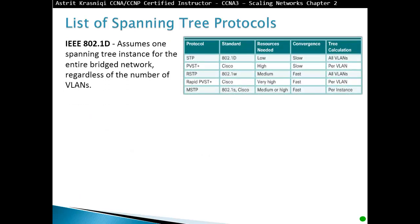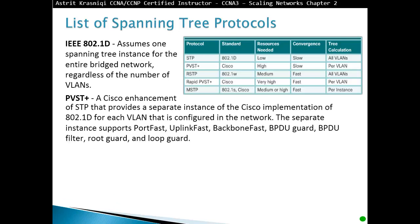IEEE 802.1D assumes one Spanning Tree instance for the entire switch network regardless of the number of VLANs. A Cisco enhancement, per-VLAN Spanning Tree Plus, runs an independent instance of 802.1D for each VLAN. It supports features like PortFast, Uplink Fast, Backbone Fast, BPDU Guard, BPDU Filter, Root Guard, and Loop Guard.